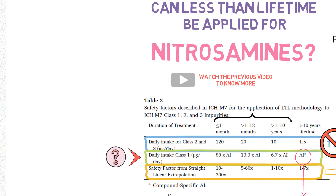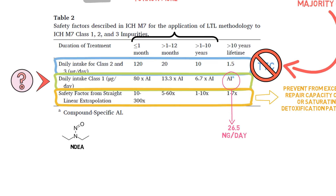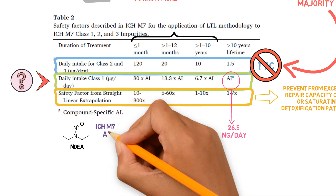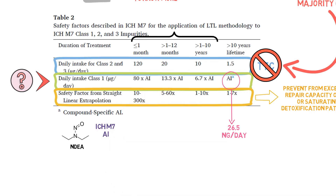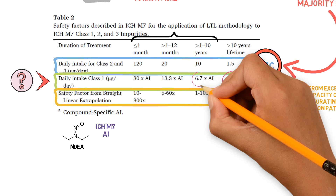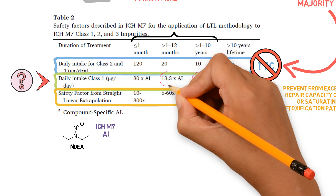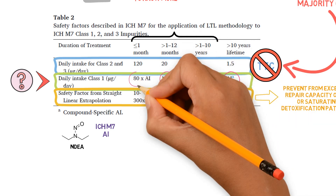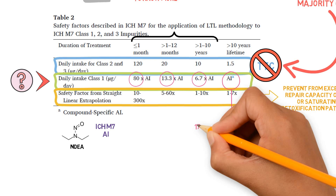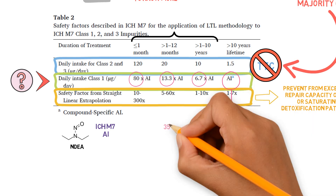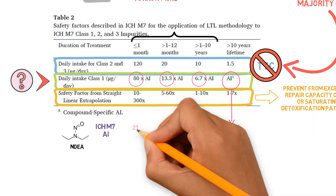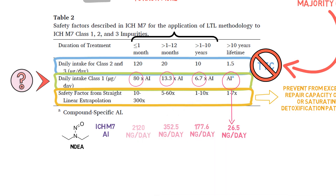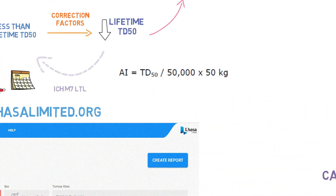So what would be the acceptable intake for less than lifetime? If we applied the ICH M7 principles, we would be multiplying this 26.5 nanograms per day by 6.7, 13.3, or 80, depending on the duration of exposure, and finding our higher limits for these shorter exposures. But are these limits conservative enough — how can we find this out?